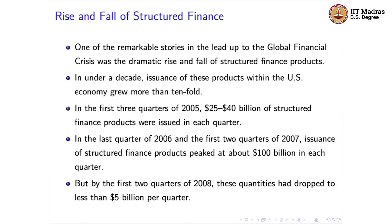One of the remarkable stories was the dramatic rise and fall of structured finance products. To give some numbers: in under a decade, issuance of structured financial products within the US grew by more than 10 times. In the first three quarters of 2005, around 25 to 40 billion dollars of structured finance products were issued each quarter. By the last quarter of 2006 and the first two quarters of 2007, this number went up to around 100 billion dollars. However, by the first two quarters of 2008, the quantity dropped to less than 5 billion per quarter.